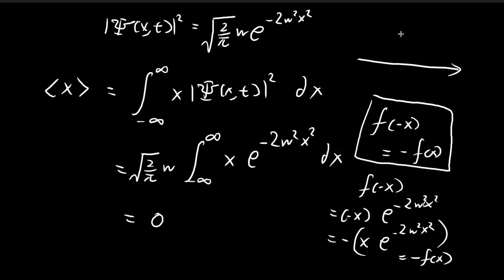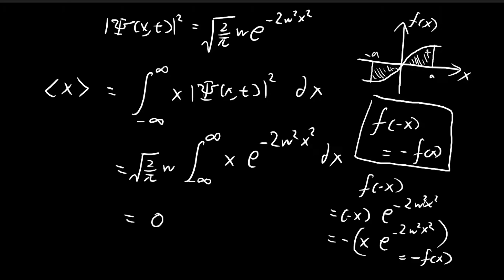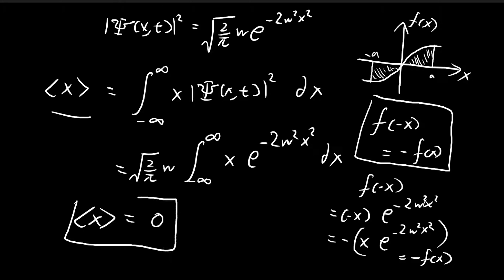We can visualize this graphically. If a function is an odd function it looks symmetrical, and integrating from negative a to a means the contributions cancel each other out — the negative part and positive part add to zero. So this whole integral is equal to zero, and the expected value of x is equal to zero. That's our first answer.